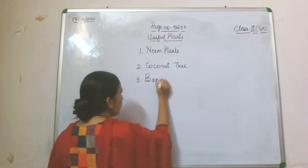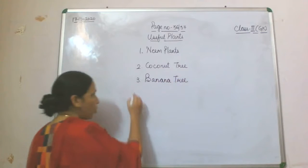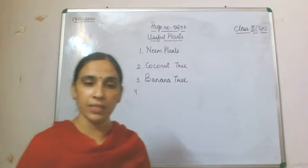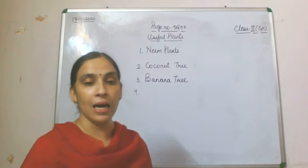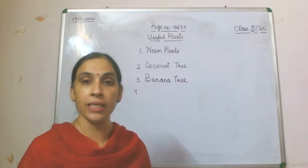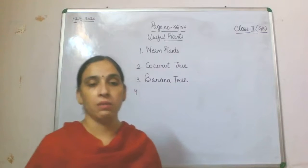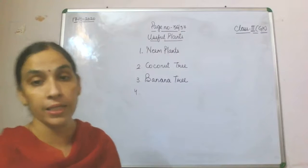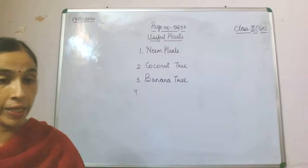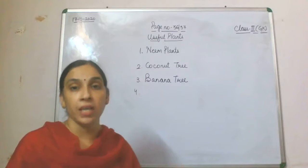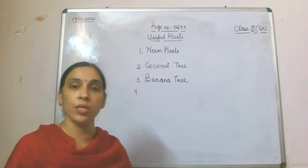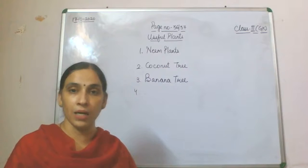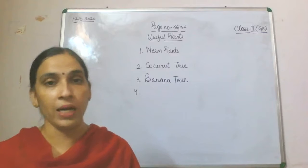Every part of the banana tree is also very important. Next is the banana tree, which we often find in our surroundings. We can get bananas from the banana tree, which can be utilized in many ways. In fact, the leaves are also used for serving food. Even in big restaurants and hotels, banana leaves are used as plates to serve food.